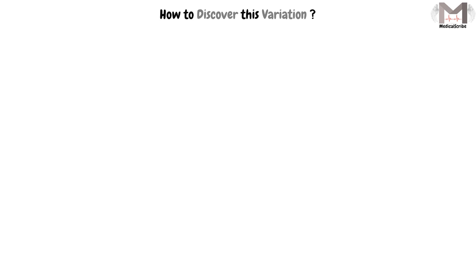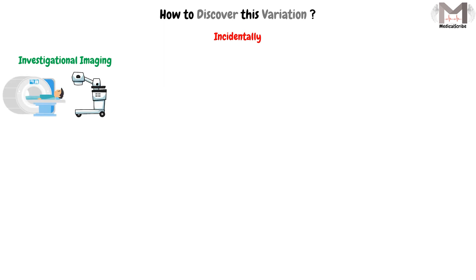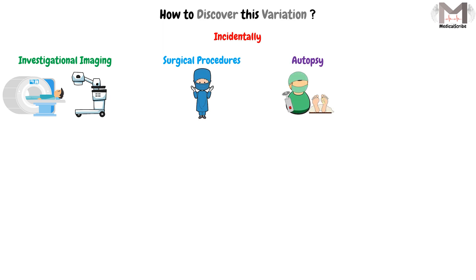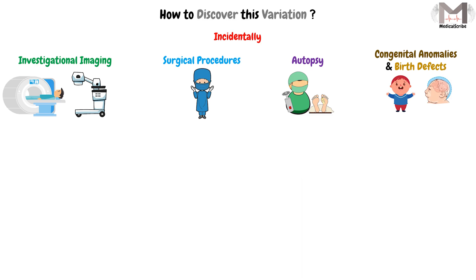Another thing we should focus on is how we discover these variations. In fact there are many ways, and most of the time it is discovered incidentally — by investigational imaging like X-ray and CT scan, during surgical procedures, or at autopsy. Congenital anomalies and birth defects, which are mostly discovered at birth, are another way to discover anatomical variations.